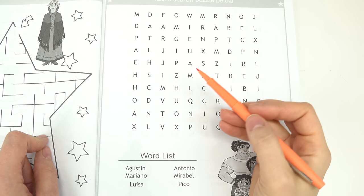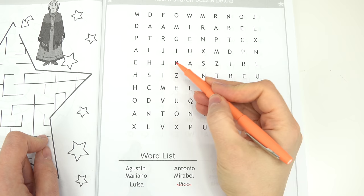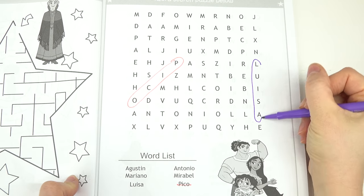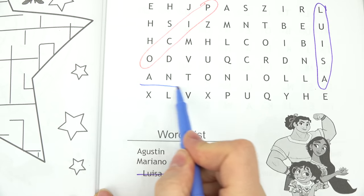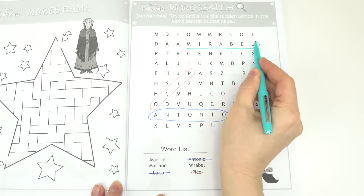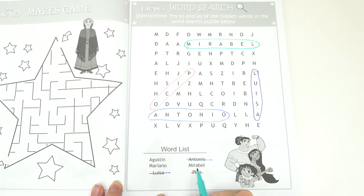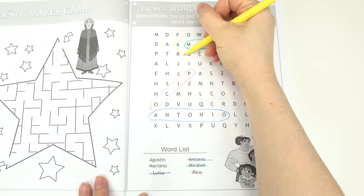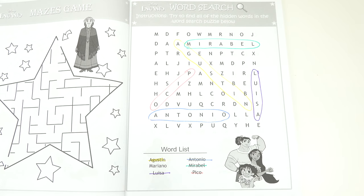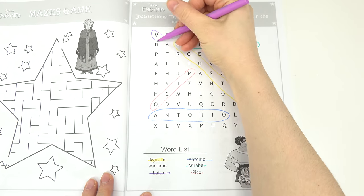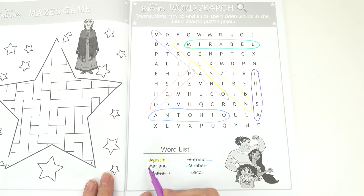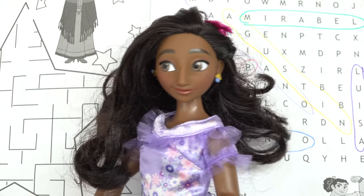These are a little bit more challenging. I found Pico, which is right here. Louisa is on the end right here. Antonio's on the bottom. I found Mirabelle up here. Augustine was challenging but it's going down. We've got one more to find — finally I found it: Mariano, right next to Augustine. Perfect, we found them all!